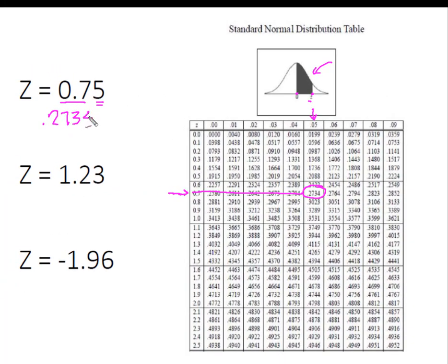So if I move 0.75 standard deviations above or below the mean, 27.34% of my data will be located in that area.